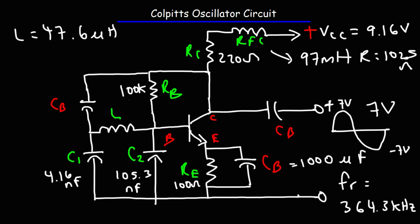The Colpitts oscillator circuit works very well. It's very simple to build, and it only requires a single transistor to work, which is great. And also, the frequency of the oscillations is quite stable for this circuit.